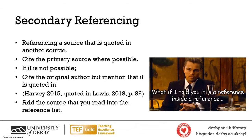Where this is the case, you will want to cite the original author, but do mention that it's been quoted in the book that you've read. So for example, if I was reading Lewis's book from 2018 and I found that he quoted Harvey, I would say: Harvey, quoted in Lewis, 2018, and then what page I found it on. When you enter into your reference list though, don't enter Harvey, because you haven't actually seen or read Harvey — only add in the book that you've actually read. So here you'd add in Lewis.